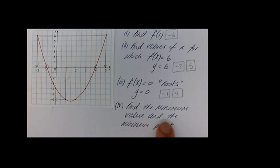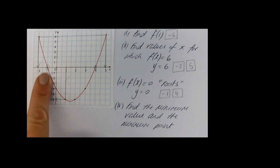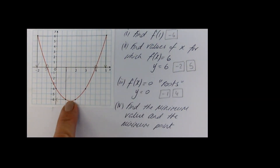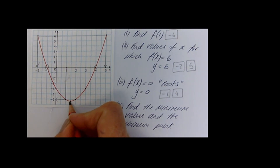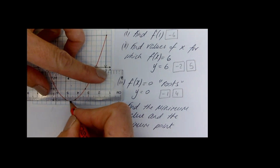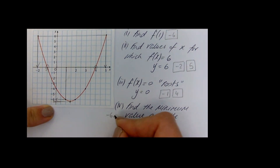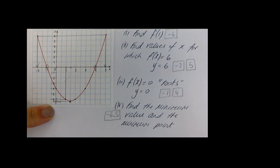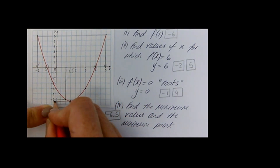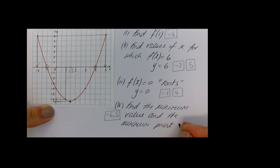Find the minimum value and the minimum point. The minimum value is the lowest value — the lowest point on the graph is right down here. If I want the value, I read across to see how low that is on the y axis — approximately minus 6.5 is your minimum value. And then the minimum point is the coordinate point: along at 1.5 and down at minus 6.5. So the minimum point is (1.5, minus 6.5).